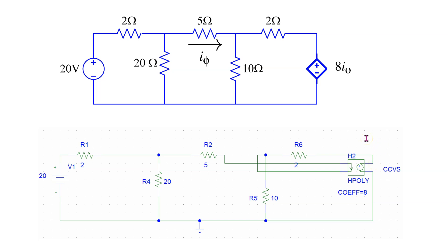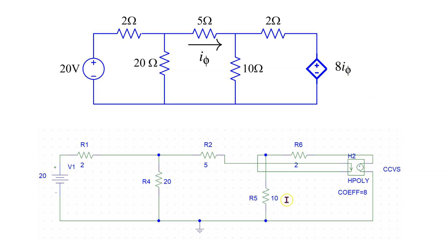Please pay particular attention to how the current source is wired up in the circuit. We can see that the controlling variable I phi is the current that enters the 5 ohm resistor in this direction. Hence here we are connecting this end of the 5 ohm resistor to this end of the current controlled voltage source, and then this current flows out and connects back to this node. Similarly, this part of the connection represents the connection shown here. Please note that there is no node formed and this is just wires crisscrossing, which is fine in PSPICE.